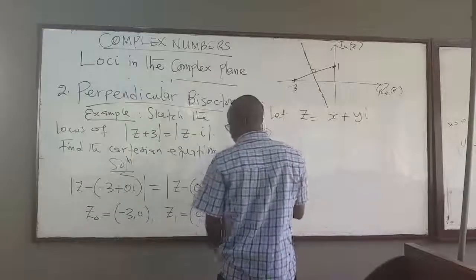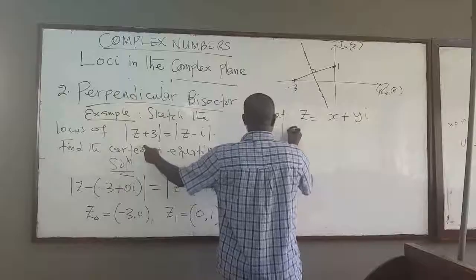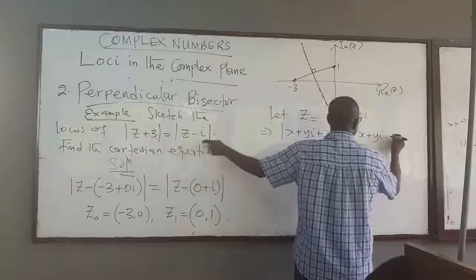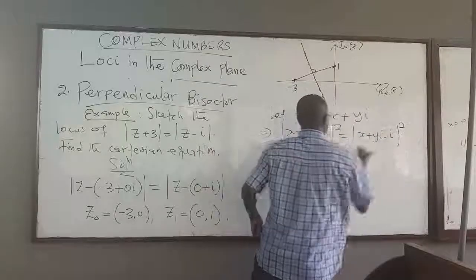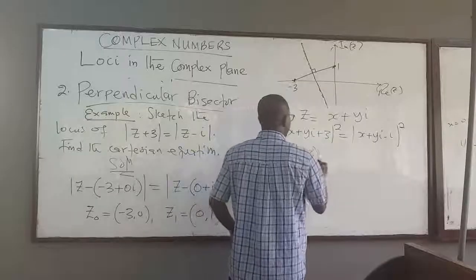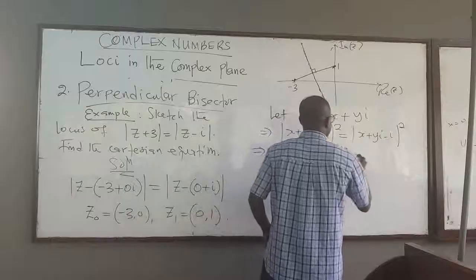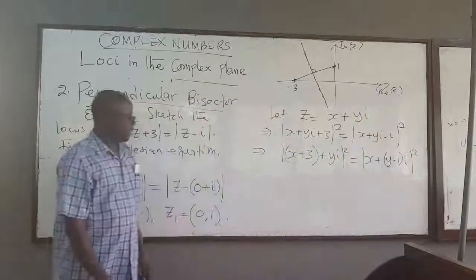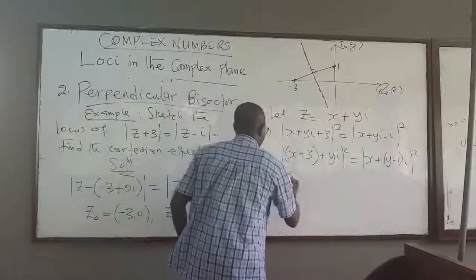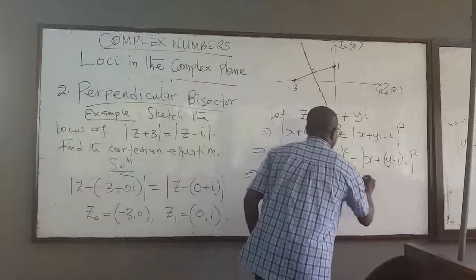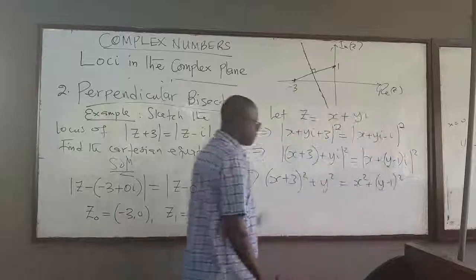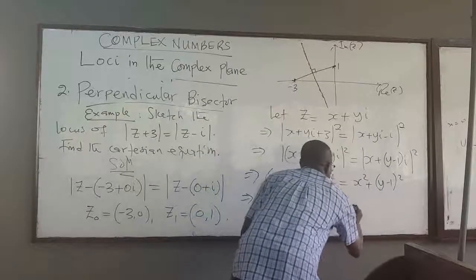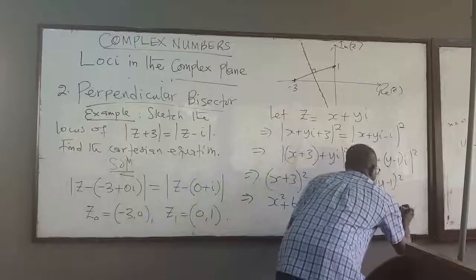This implies that the absolute value of x plus yi plus 3 is equal to x plus yi minus i. I can square both sides so I don't deal with the square roots. I can rewrite the left side as x plus 3 — combining the real parts — and rewrite the right side as x plus (y minus 1)i. So squaring, I have (x + 3)² + y² must be equal to x² + (y − 1)².